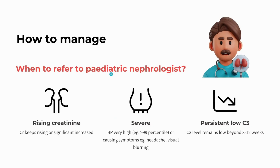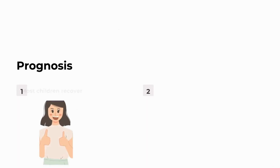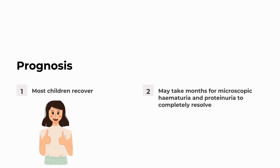When should you refer to your pediatric nephrologist? Refer if there is rising creatinine, severe hypertension or hypertensive emergency/urgency — such as headache or visual blurring — or persistent low C3. Referral is also needed to consider renal biopsy. The prognosis is good — most children recover. Microscopic hematuria or proteinuria may take months to completely resolve. Generally, this is not a very severe disease.